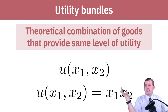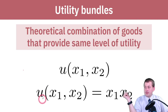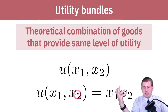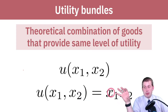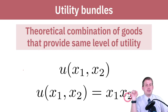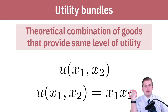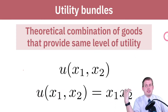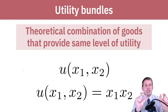Here's a simple utility function: if x1 is ice cream and x2 is pizza, your utility is just the number of ice creams you eat times the number of pizzas you eat. So if you eat three ice creams and two pizzas, you get three times two, which equals six units of happiness — that's the utility you get from that combination.